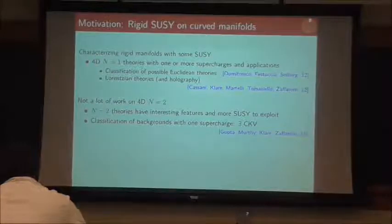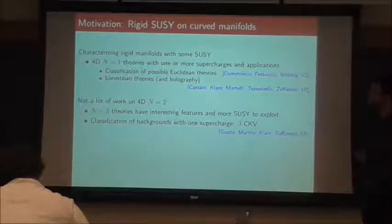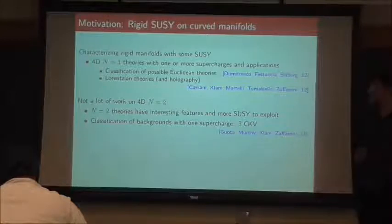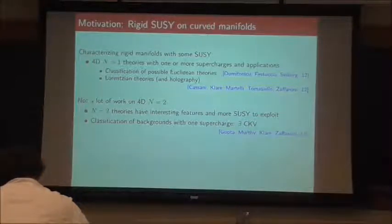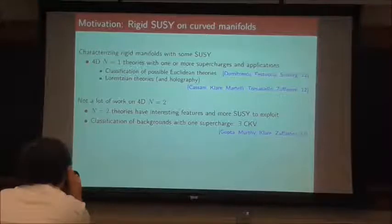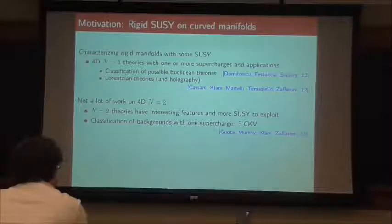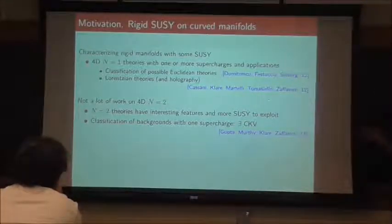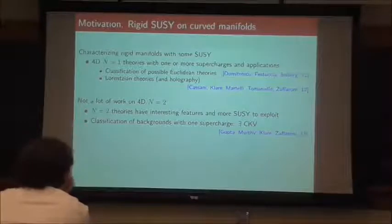After they gave a systematic approach, there were a large sequence of papers really hitting this home. For 4D N=1 with one or more supercharges, I would say, has more or less been put to bed. A very nice paper by Dumitrescu, Festuccia, and Seiberg, who looked at all possible Euclidean theories, starting with assuming one supercharge and working their way up to four supercharges, analyzing the possible backgrounds admitting that number of supercharges. There's also a nice paper by Cassani, Halmagyi, Tomasiello, and Zaffaroni, whose classification completed one to four.